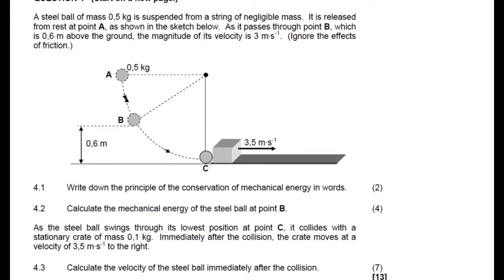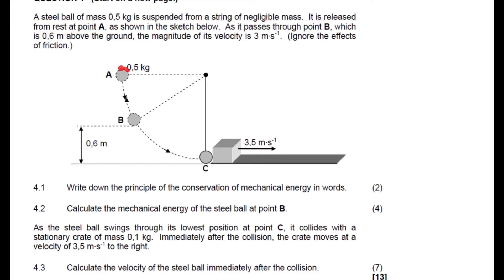Let's look at the momentum energy question. It says a ball of mass 0.5 kg is suspended from a string of negligible mass. It is released from rest at point A, which means the initial velocity is zero, as shown in the sketch below.